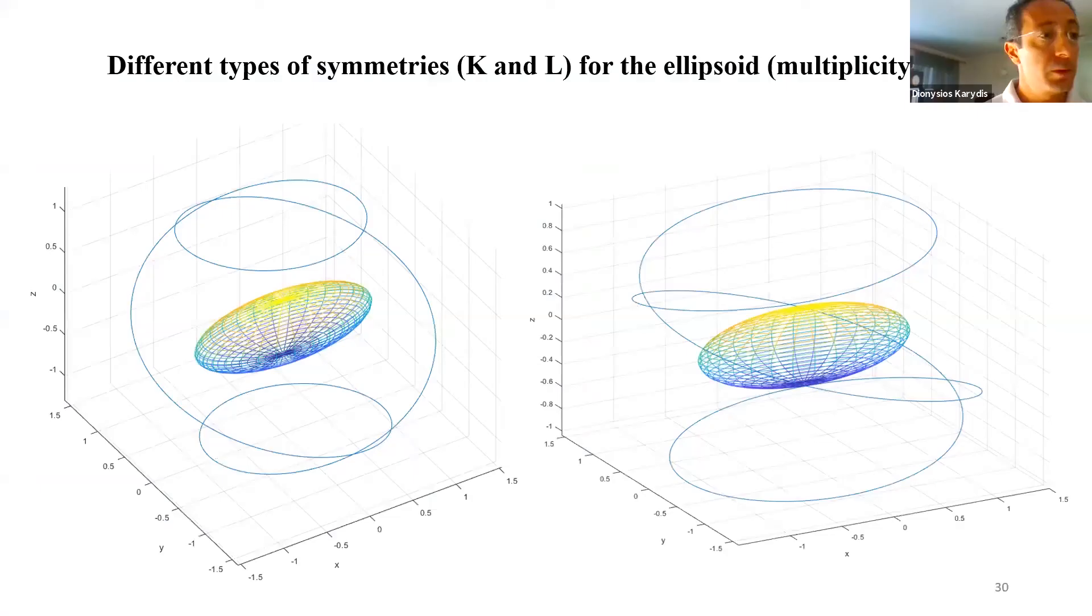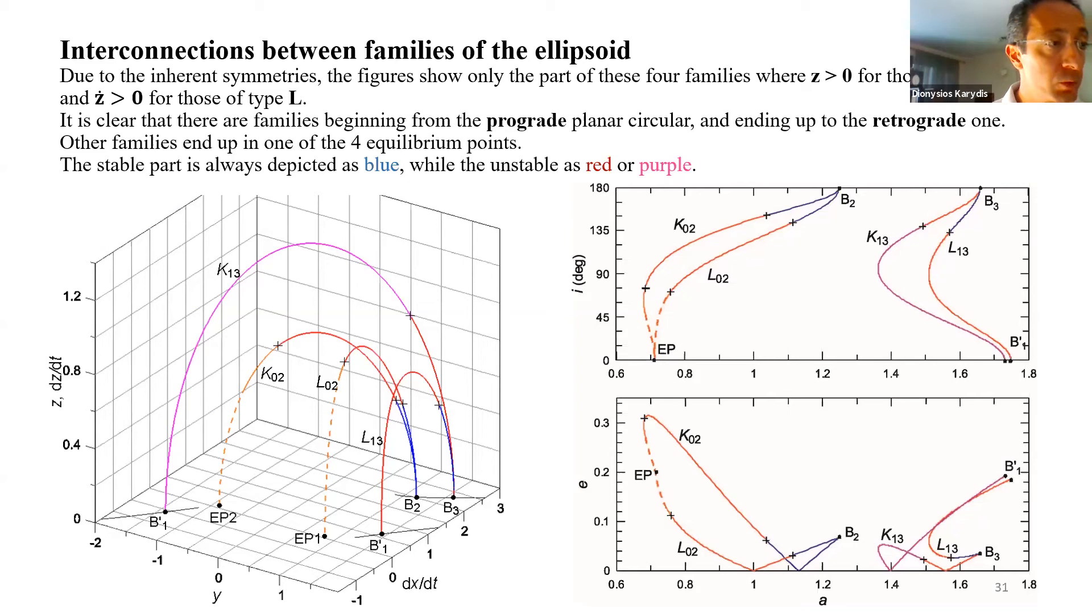We can see here the interconnections between four families of the ellipsoid that form bridges between the prograde and the retrograde planar circular. Other families end up in one of the equilibrium points though. Four other families of the ellipsoid are depicted here, as well as their relations to each other.